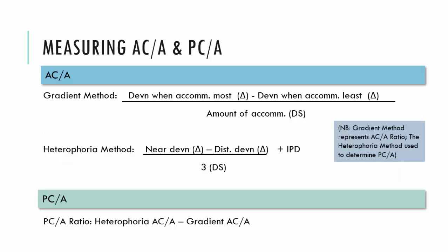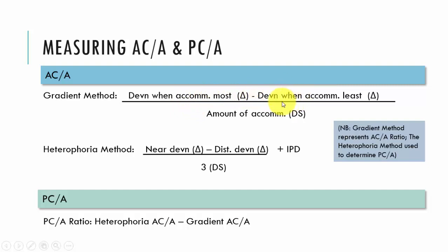Looking at the formulas for calculating the ACA ratio using the gradient method, we compare when the patient accommodated most in prism diopters from the PCT versus when they accommodated least, then divide by the amount of accommodation exerted or relaxed. In the earlier example, the patient was assessed in the distance without glasses, then we put up minus three lenses. The PCT result with the minus three lenses goes first — when accommodation was induced — subtracted from the PCT with no correction, then divided by the lens value. If the patient could see clearly with the three diopter lenses, we divide by three.